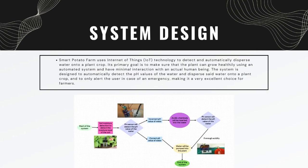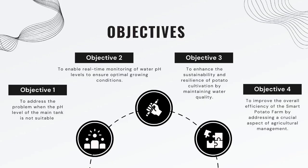For system design, the smart potato farm uses Internet of Things (IoT) technology to detect and automatically disperse water onto a plant crop. Its primary goal is to ensure the plant can grow healthily using an automated system with minimal human interaction. The system is designed to automatically detect the pH values of the water, disperse water onto the crop, and only alert the user in case of an emergency, making it an excellent choice for farmers.